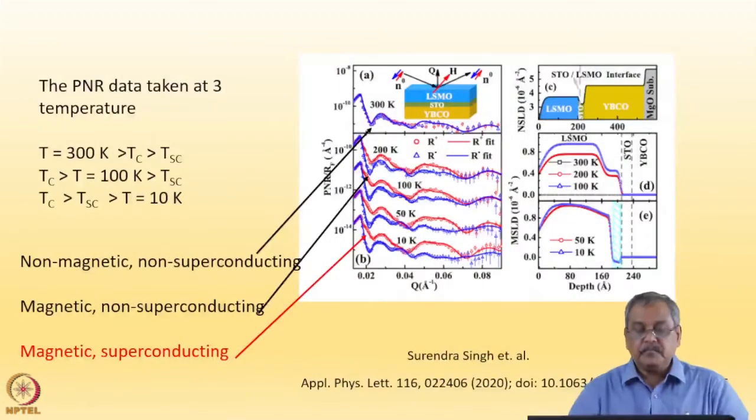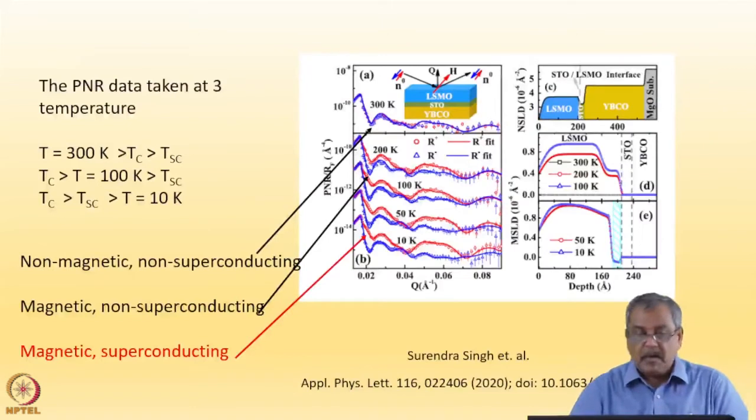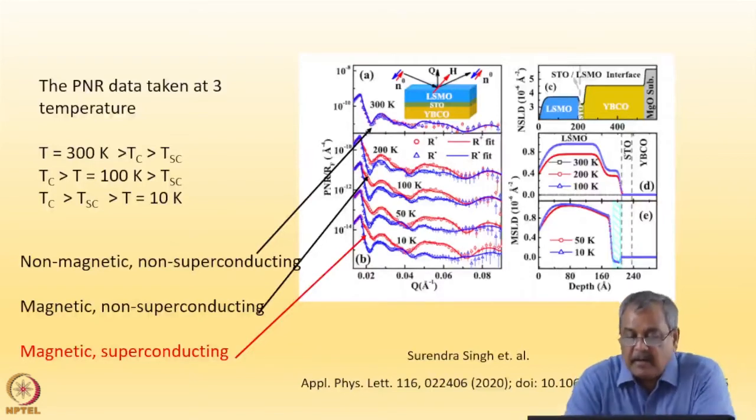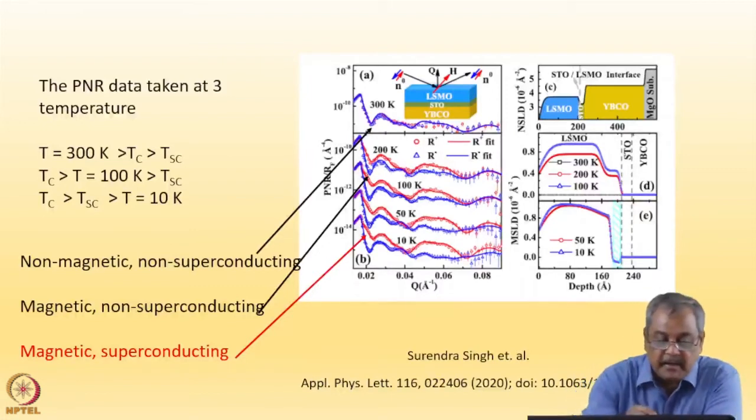Here I show you the results. The polarized neutron reflectometry data was taken at three temperatures. One is at 300 Kelvin. At 300 degrees Kelvin, neither LSMO is ferromagnetic nor the YBCO is superconducting.